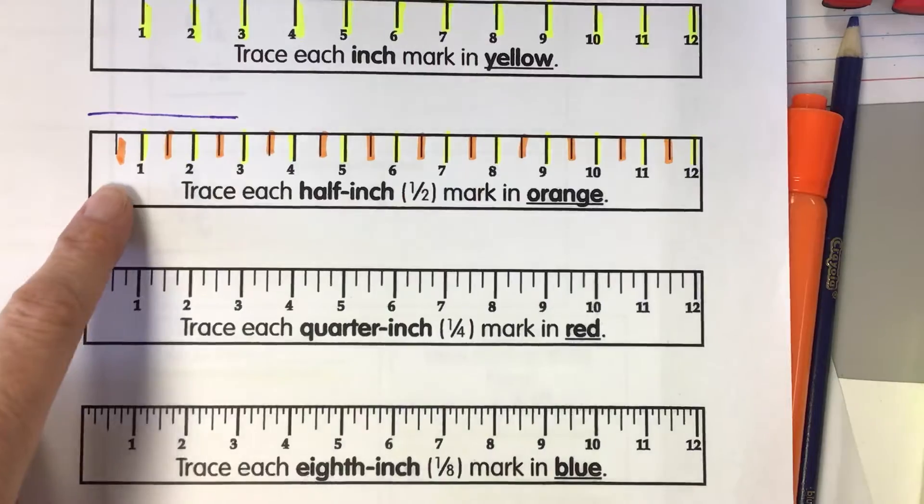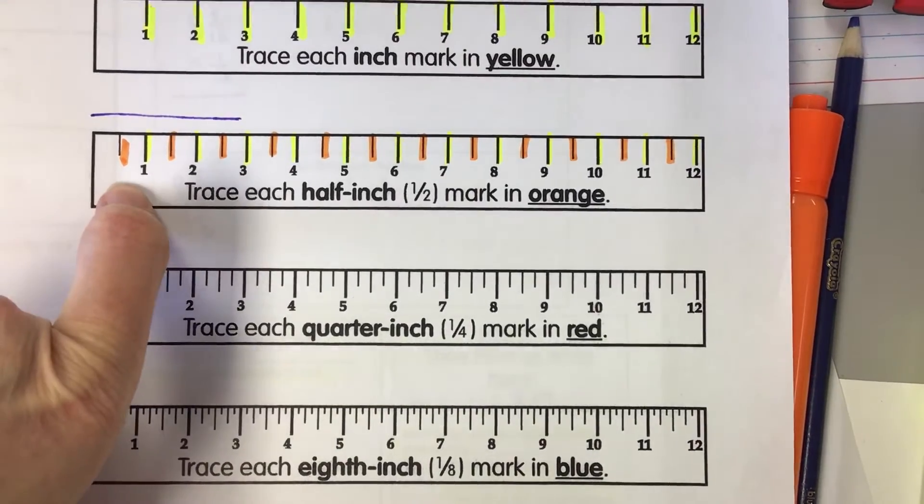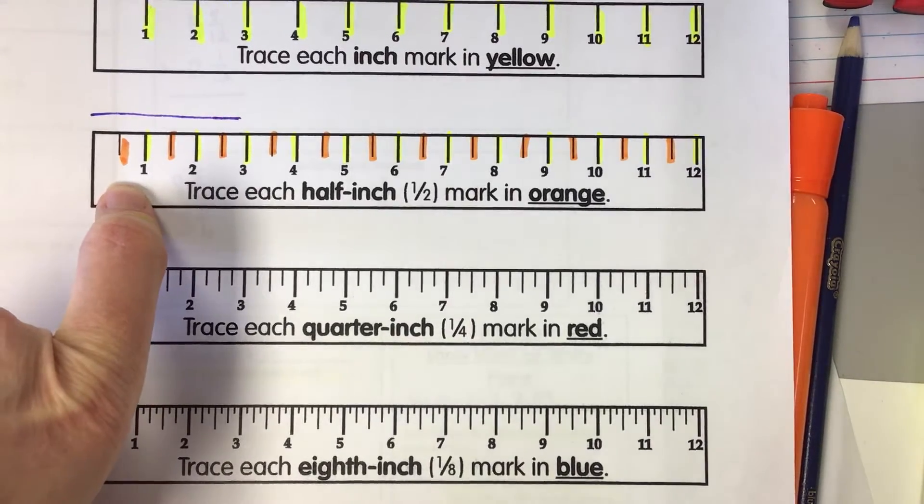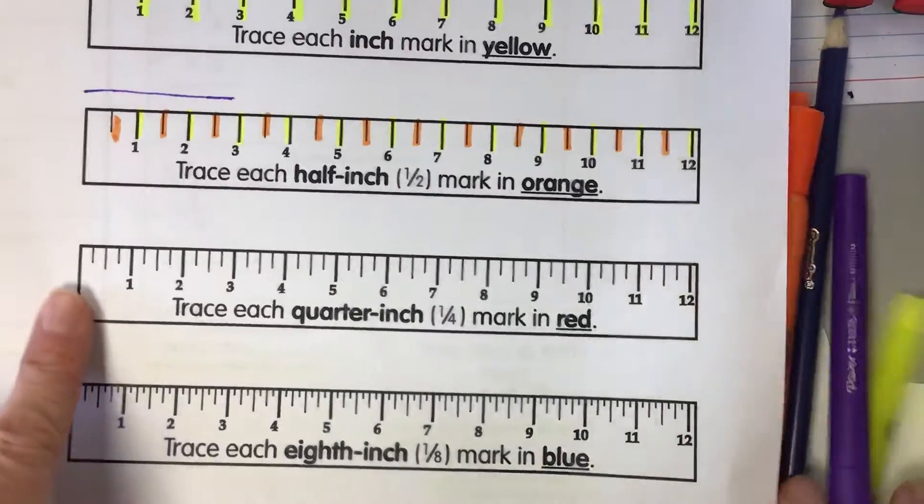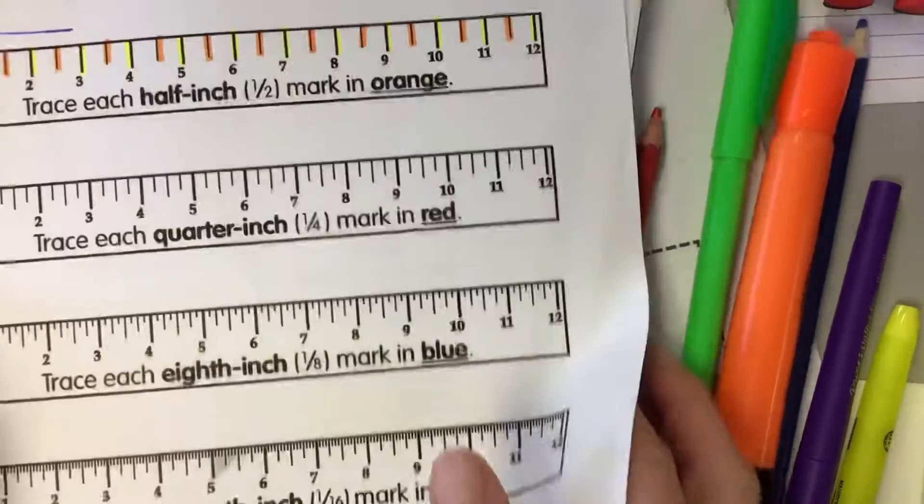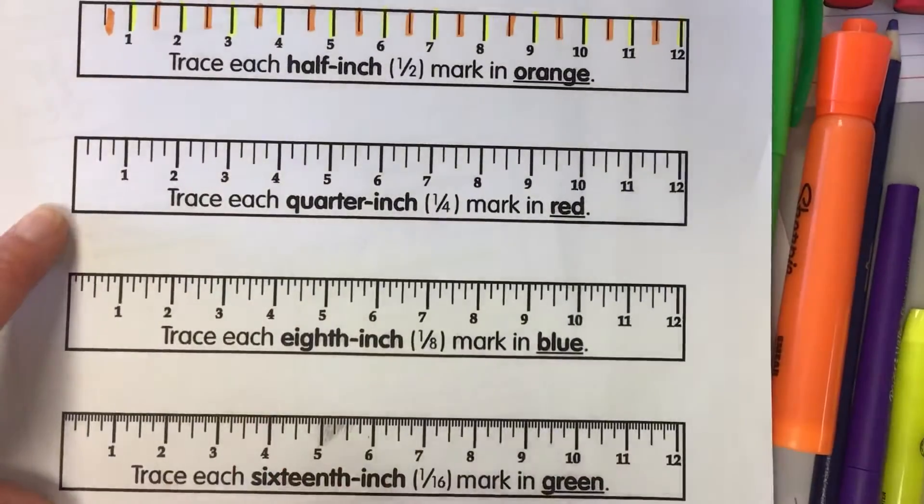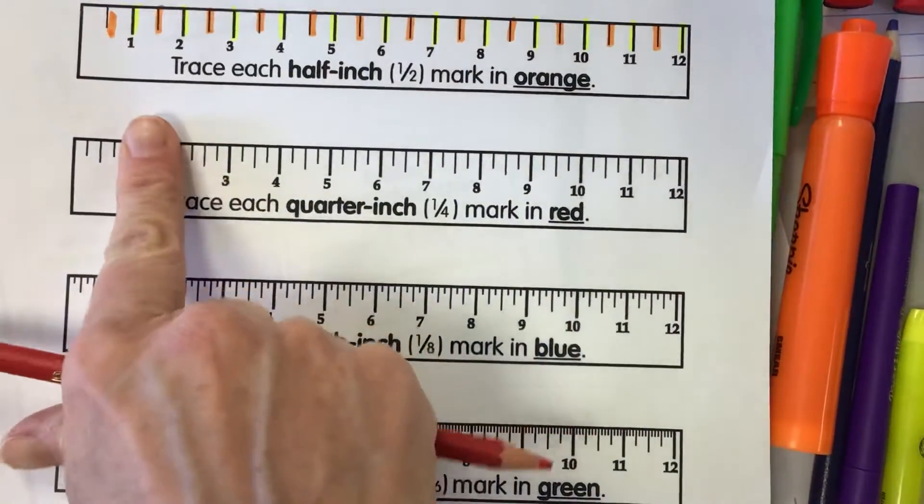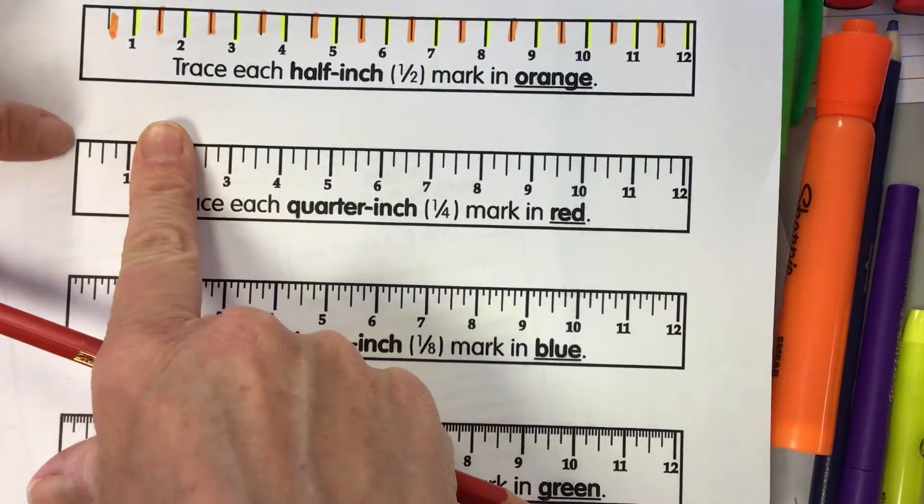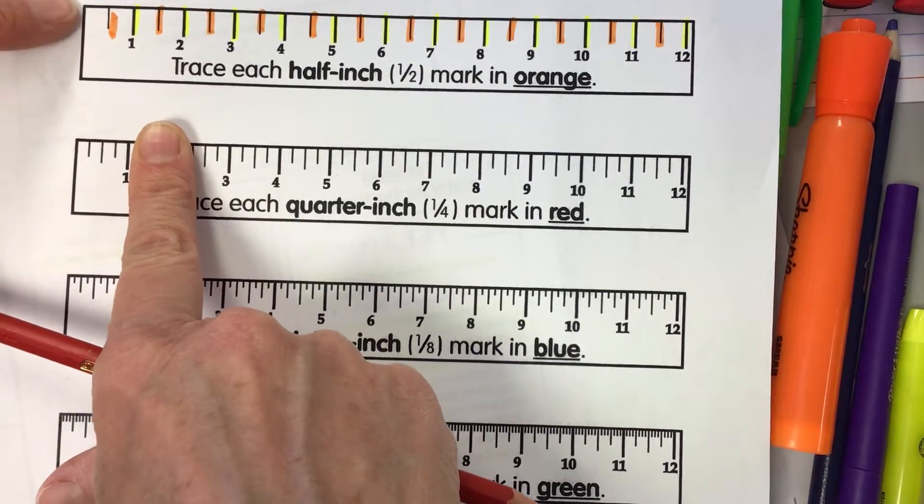Okay, now this ruler is divided into fourth inches, so they've taken one inch and divided it into four equal parts. Can you see that?